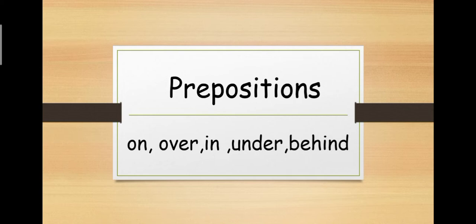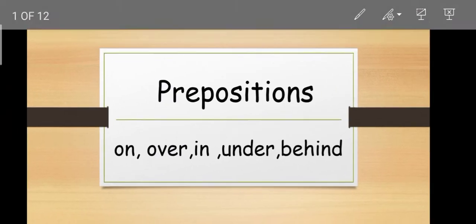Dear kids, prepositions mein ek word hai, positions. So, what are prepositions? Prepositions are the words which help us to tell about position or location of something. For example, my phone is on the table. So, here they are telling where is my phone, what is the position of my phone. My phone is on the table. Yani, table ke upar.